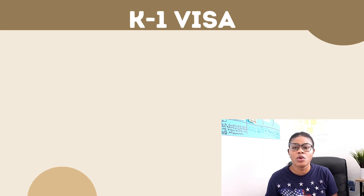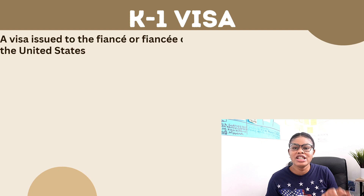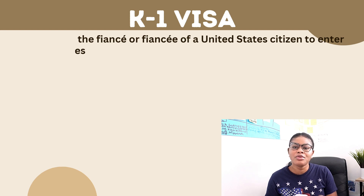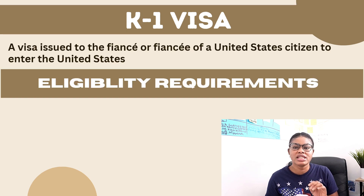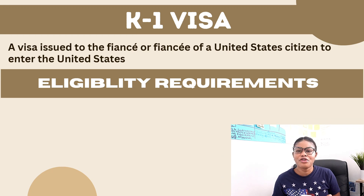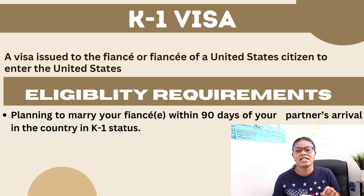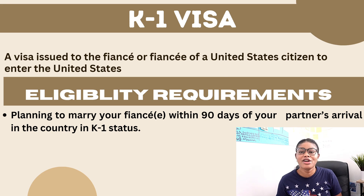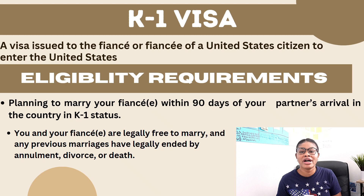Let's start with defining what a K-1 visa is. A K-1 is a visa issued to the fiancé or fiancée of an American citizen to enter the United States. There are eligibility requirements you need to meet. The first one is you have to be married within 90 days of your alien fiancé arriving in the United States.